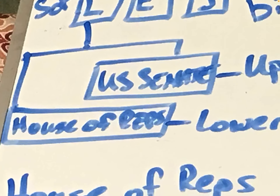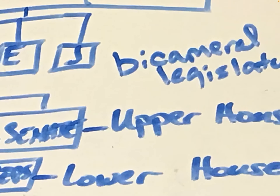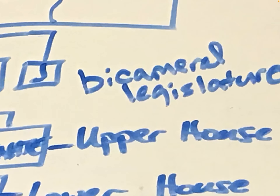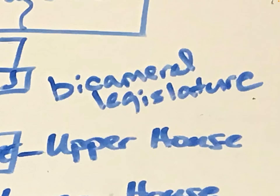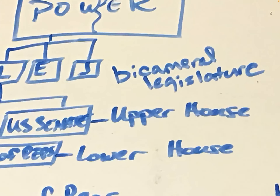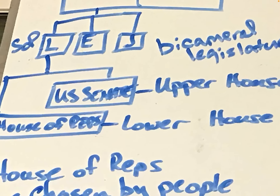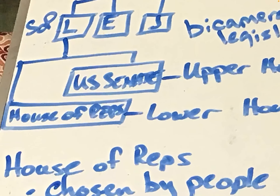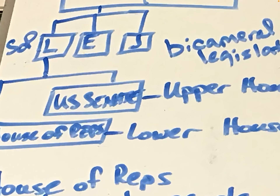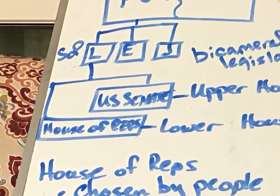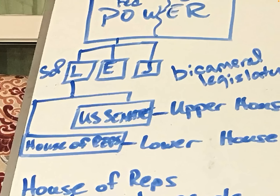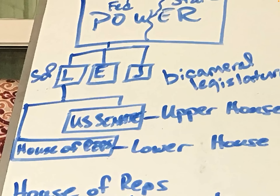There's going to be a Senate and a House of Representatives, which gives us a bicameral legislature. Bicameral means there are two houses in the legislature. The Senate is considered the upper house; the House of Representatives is considered the lower house, closer to the people.